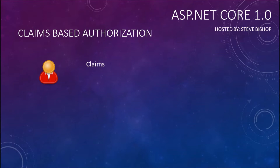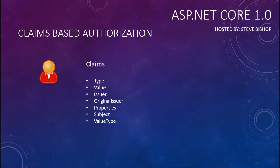Claims are an object that have several different properties on them, like type, value, and issuer. Those are the three primary properties on a claim that we are going to be concerned with, but there are some additional properties like original issuer, properties, subject, and value type.